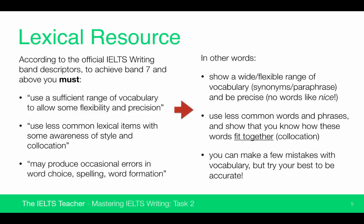In other words, you need to show a wide or flexible range of vocabulary. Demonstrate your knowledge of synonyms and your ability to paraphrase rather than using the same words over and over again. Be precise — avoid vague words like 'nice'; there are usually much more precise adjectives available. It's the same for words like 'good': instead of 'good,' which could mean good morally or good functionally, you could use a word like 'effective,' which is much more precise.